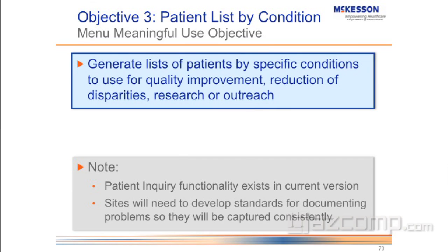The big note here that we talked about earlier is that sites will need to develop standards for documenting problems so that they will be captured consistently. The easiest way to do that is just to use the ICD-9 codes, or if you just say every time a patient comes in with diabetes, you're going to type in the word diabetes this way — no caps.